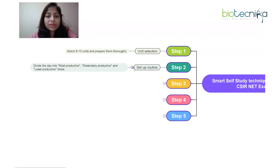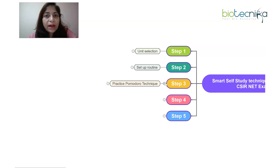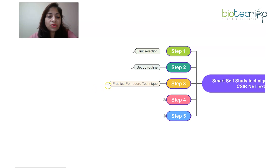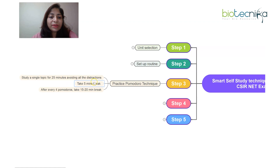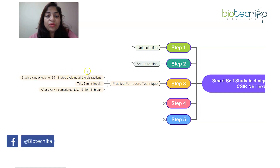Once your routine is set, move to step three: practice the Pomodoro technique. Your actual study sessions will be performed using the Pomodoro technique. There are various Biotechnica videos that talk about how to do the Pomodoro technique in detail. Briefly, you divide your sessions into small segments — let's say 25-minute sessions.